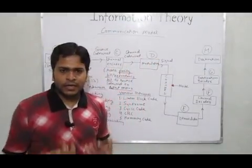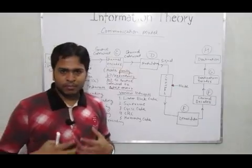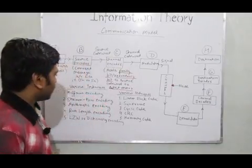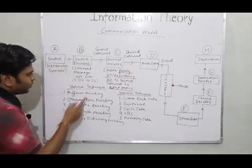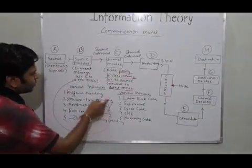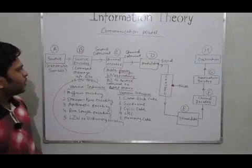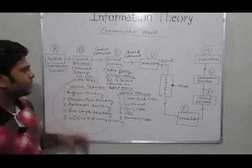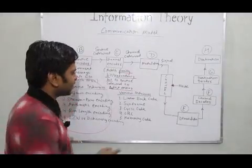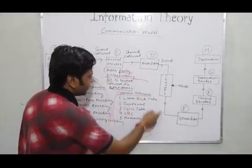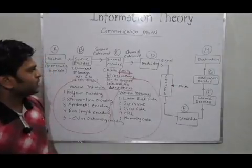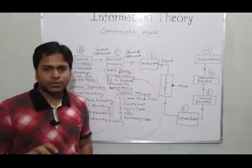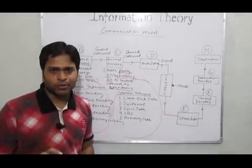So in the communication model the main thing that we have to study in information theory basically includes various techniques of source encoding, that is how we can convert a message into bits. And the second thing is various techniques involved to do the channel encoding where we can add redundancy bits to the source code word.